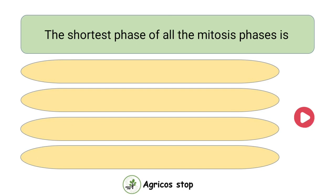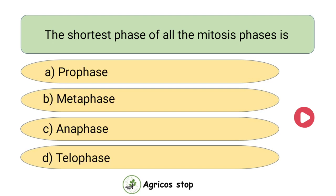The shortest phase among all the mitosis phases? Options are Prophase, Metaphase, Anaphase, and Telophase. The answer is Anaphase. Anaphase is the shortest phase of all the mitosis phases.